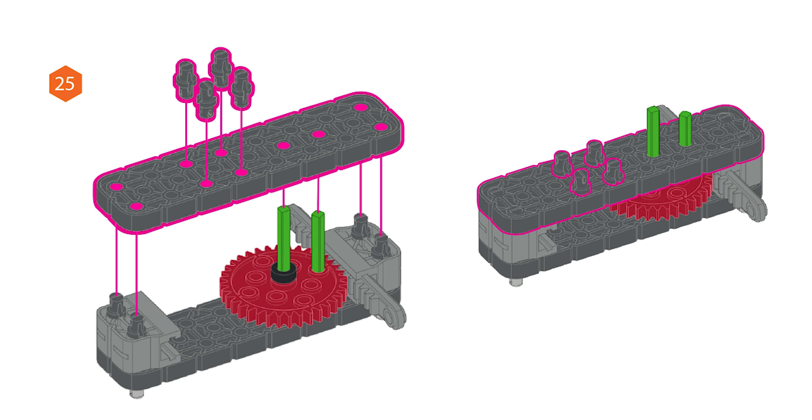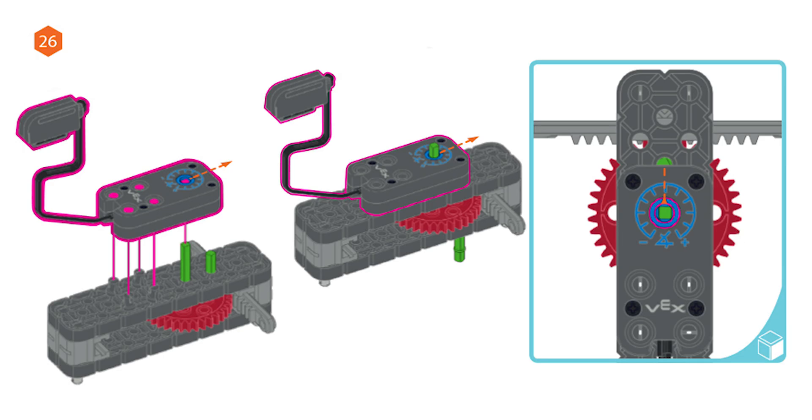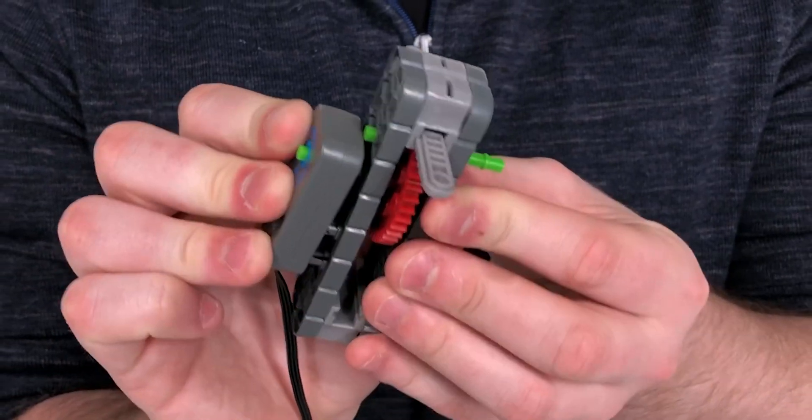Step 25: place another plate with four pins inserted on top of the shaft so that they form an enclosure. Step 26: ensure the angle sensor is in the forward position and secure it on top of the enclosure, pushing the locking shaft out of the way and securing the shaft in the center of the gear into the sensor.